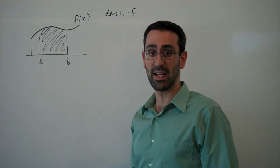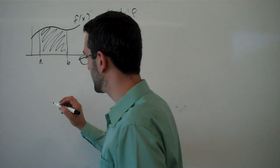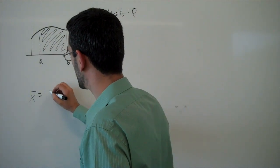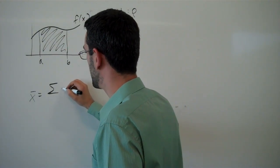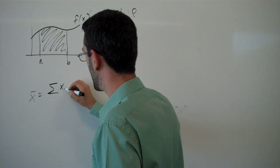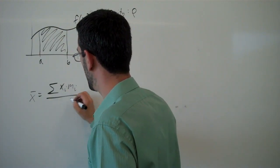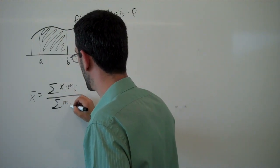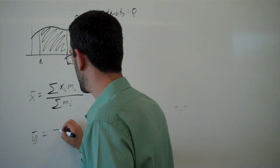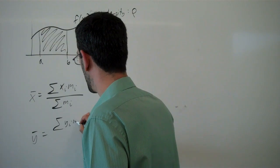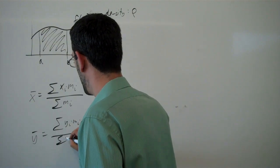So we know how to do point masses. We know that for point masses, the x center of mass is the sum of xi times mi over the sum of mi. And similar for the y bar, right? The sum of yi mi over sum of mi.